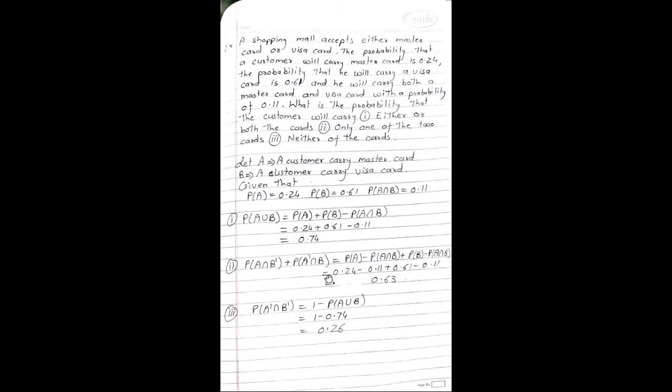Second part — only one of the two cards: P(A ∩ B complement) + P(A complement ∩ B) = [P(A) − P(A ∩ B)] + [P(B) − P(A ∩ B)] = (0.24 − 0.11) + (0.61 − 0.11). Adding and subtracting according to signs, the answer is 0.63.